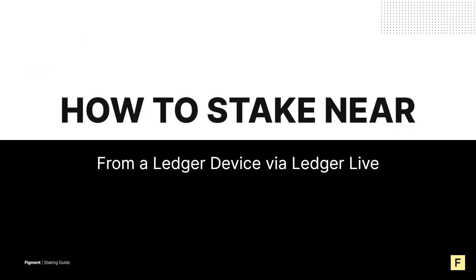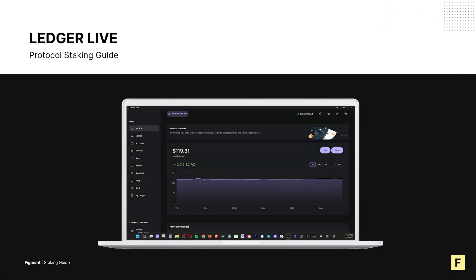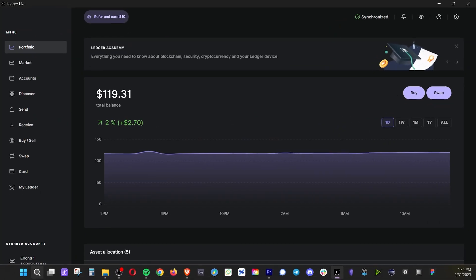Now that we know what to expect, we can start protocol staking NIR. In this video, we assume you already have a Ledger device set up and funded with NIR. However, if you're unfamiliar with the self-custody Ledger hardware wallet or how to get it set up, you can find a step-by-step guide linked in the description. To get started, let's go ahead and plug in our Ledger device and launch the Ledger Live app.